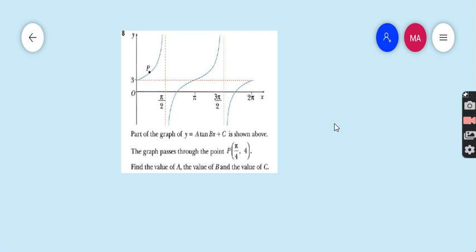Let's start question number 8. Part of the graph of y equals A tan(Bx) + C is shown above. Sorry, I have cough and flu, so my voice is not good today. The graph passes through the point P(π/4, 4). Find the value of A, the value of B, and the value of C.